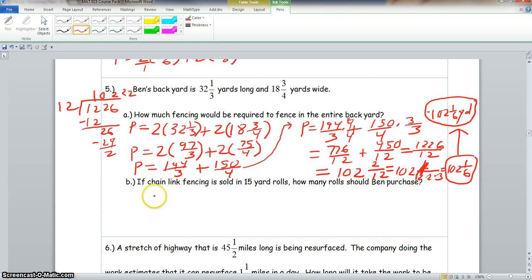Okay, now, it says if chain link fencing is sold in 15 yard rolls, how many rolls should be purchased? So we would take this 102 and 1 sixth, and divide it by 15. So 102 and 1 sixth, that would give us 613 over 6 divided by 15 over 1.